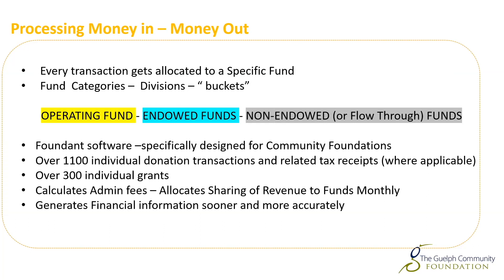The foundation made a decision to purchase a software called Foundant. Foundant is specifically designed for community foundations. Last year in 2021, we processed 1,100 individual donation transactions and related tax receipts. We also processed 300 individual grants. The advantage of Foundant is that it allows us to do many things we're doing manually a lot more efficiently, and it generates financial information sooner and more accurately — in particular, the calculation of admin fees and the allocation of revenues and monthly earnings.